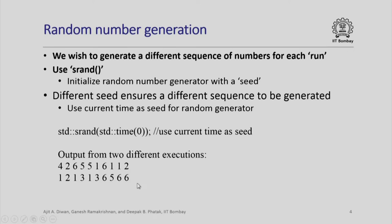A typical value used to ensure a different seed is given is simply to use the current time, for which there is a function called time. If you say time(0), the computer system will return the current time. Since that will be different every time, this function call will ensure that a different seed is given to the random number generator. Observe for example the output from two different executions — one sequence is 4, 2, 6, 5, 5, 1, 6, 1, 1, 2, and the next run gives 1, 2, 1, 3, 1, 3, 6, etc. You can try this out by running that program segment yourself.